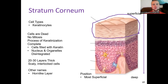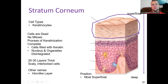The top layer is the stratum corneum, with up to 20 to 30 layers of very thin, flattened, keratinized cells. They are dead, not dividing, and filled completely with keratin. They are scaly and interlocked, forming the surface of our skin. Another name for the stratum corneum is the horn-like layer.